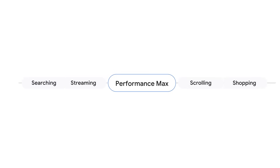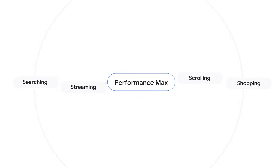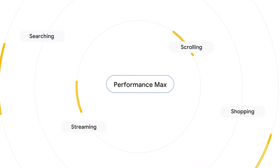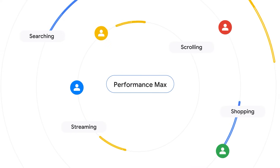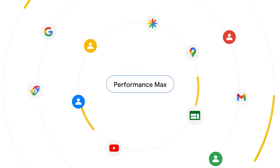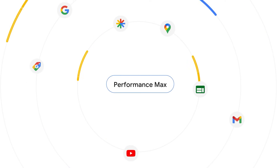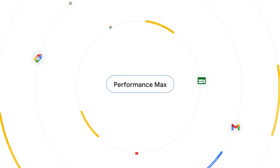Performance Max is the only campaign that helps you capture all four key consumer behaviors of searching, streaming, scrolling, and shopping. It harnesses the full power of Google AI to help you connect with customers across all of Google's channels, no matter where they are on their consumer journey.